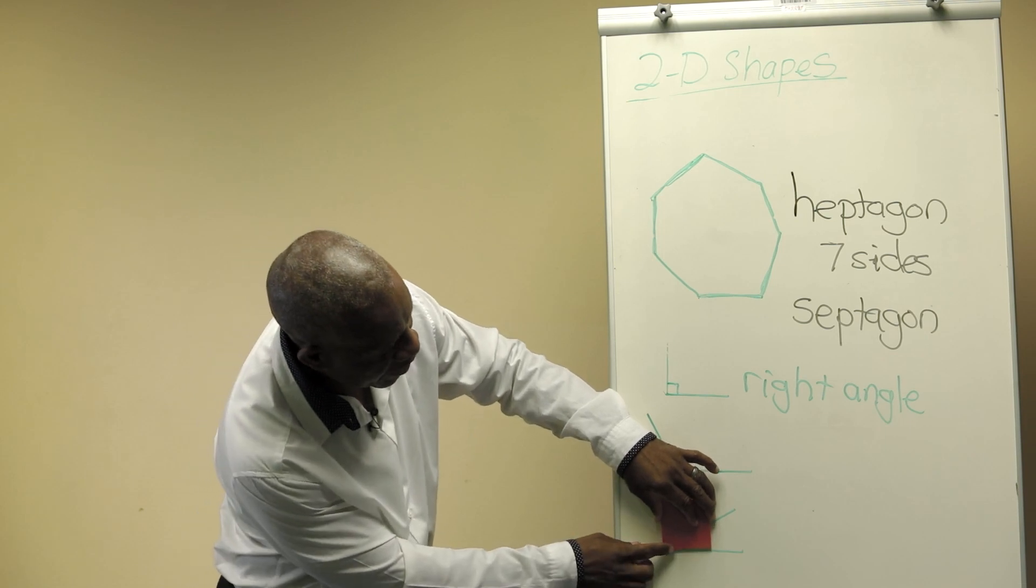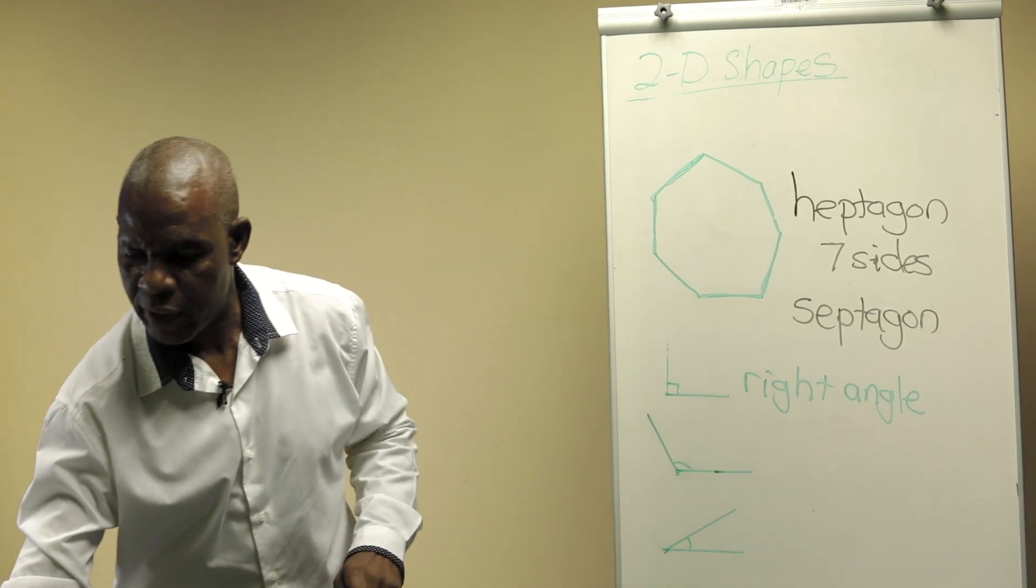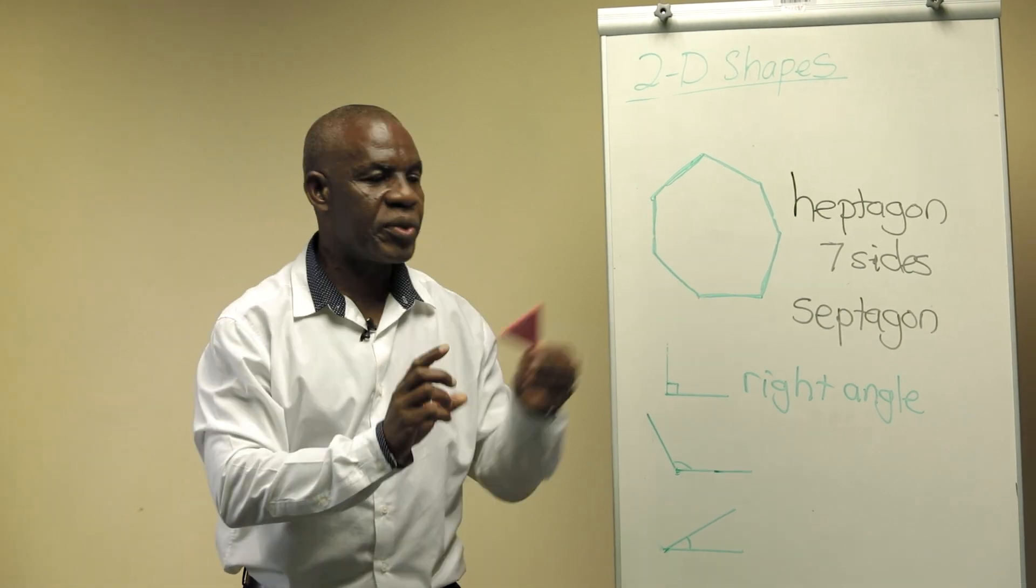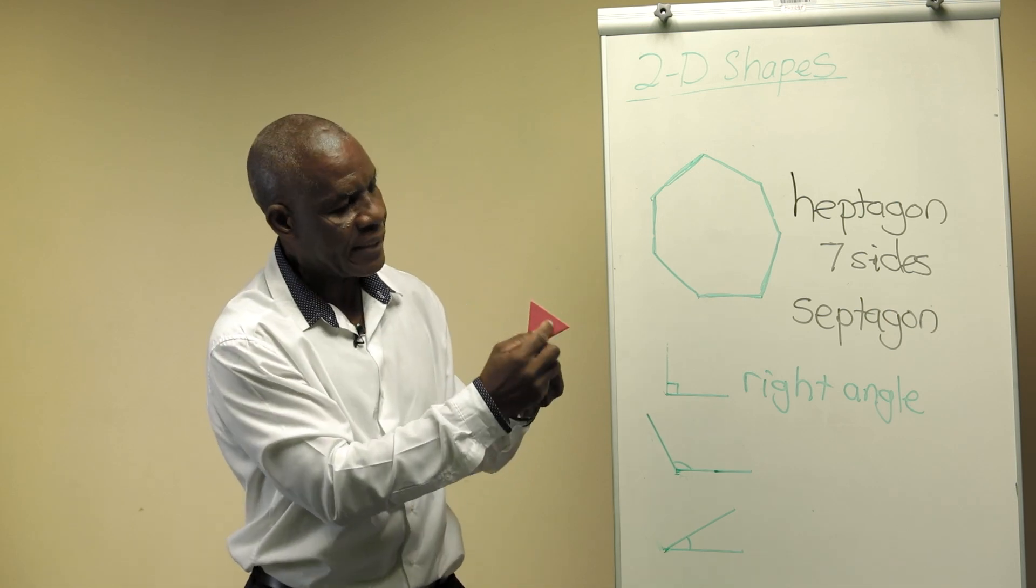And then this one, if I try to fit it in, you can see that it is smaller than a right angle. So I want you to look at your 2D shapes and say whether the angles